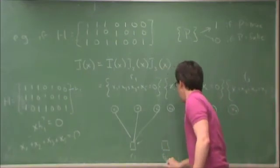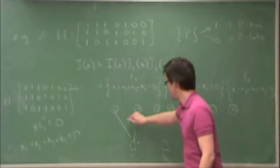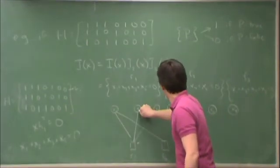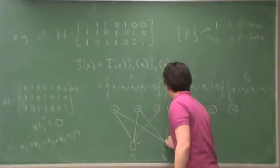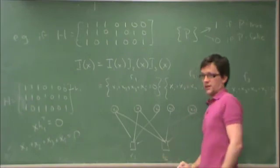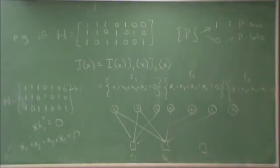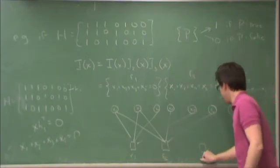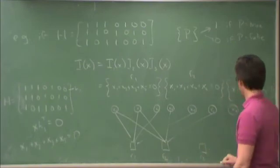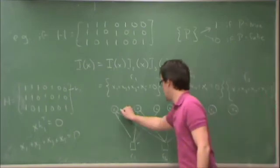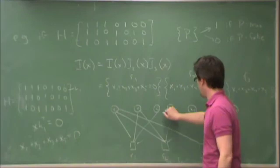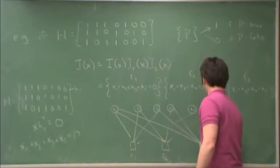f2 is a function of x1, x2, x4, and x6. And f3 is a function of x1, x3, x4, and x7.